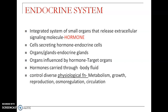A gland that releases its secretion directly into the blood without any duct is called an endocrine gland. In contrast, an exocrine gland is connected with a duct or tube that carries the chemical to the target. That is why endocrine glands are also called ductless glands.